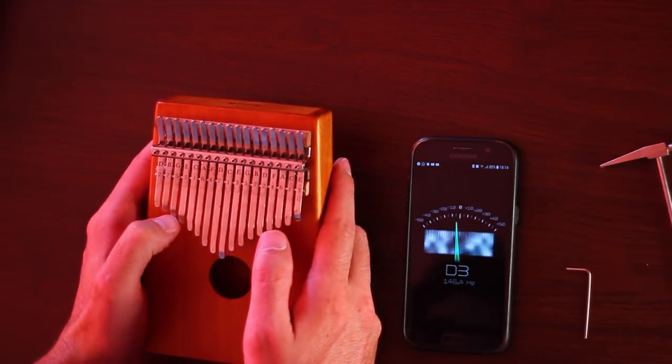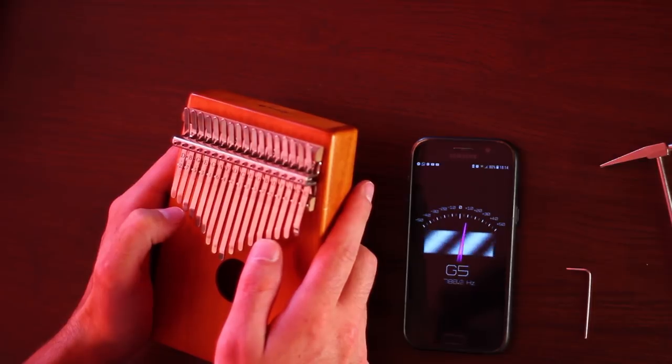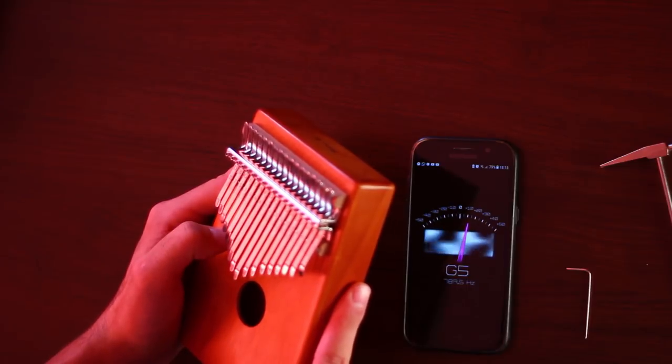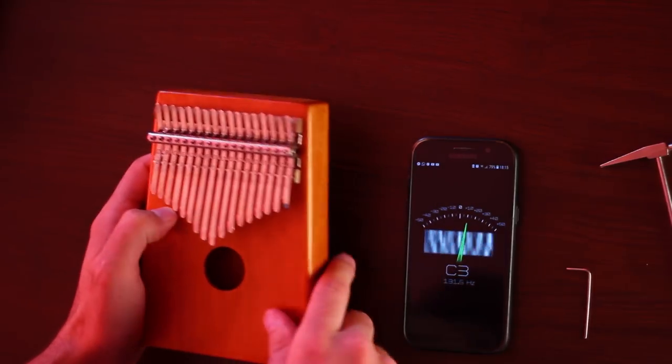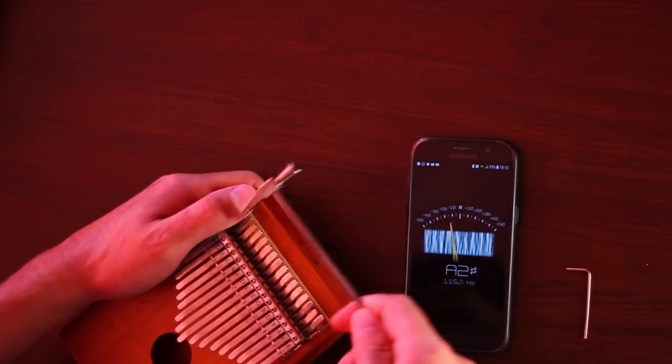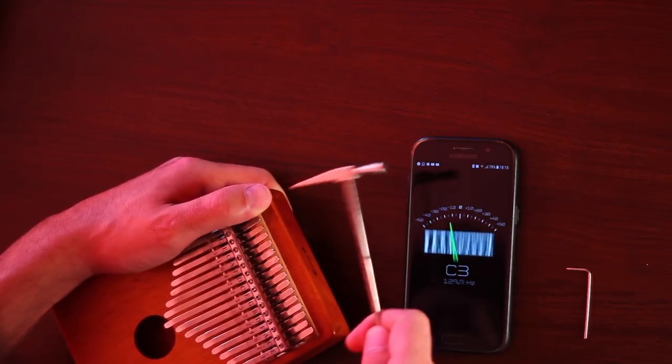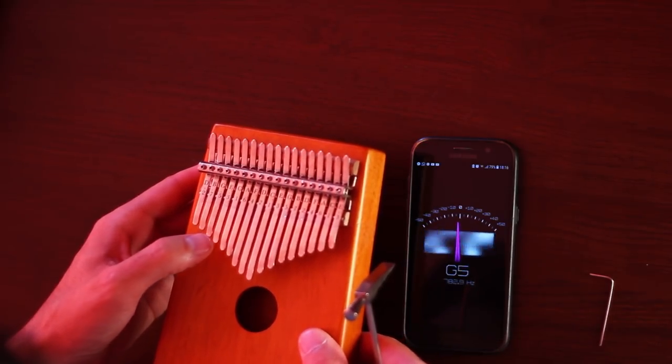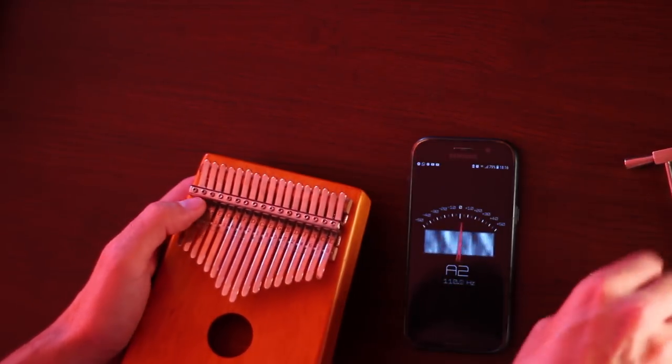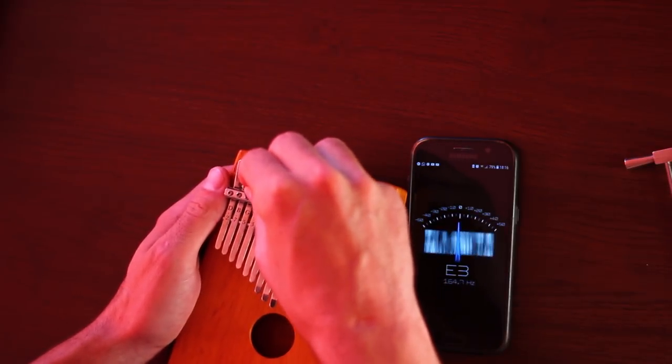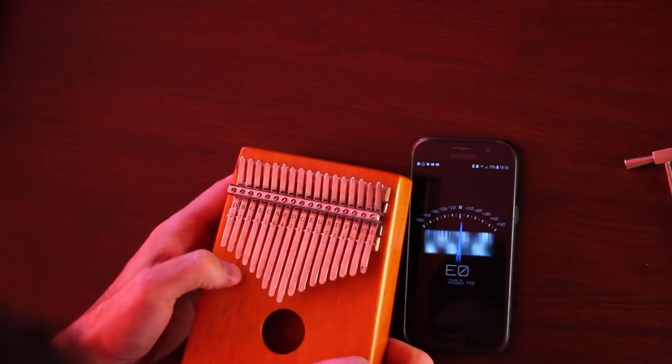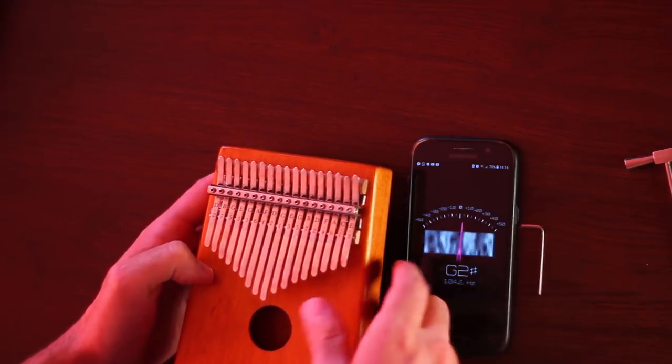Next one, G. This is a little bit higher. We need to make it lower. So to make the tone lower, we are hitting from this part. All right. We are there, but we have a buzz. So I'll use this one to just slightly, very, very slightly. All right. We fixed it.